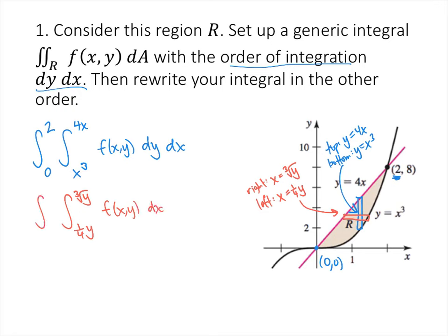My outer integral would go from the low y value, which is 0 at the point (0, 0), up to the high y value, which is 8. That integral is with respect to y. So this is my iterated integral set up in the two different orders of integration.